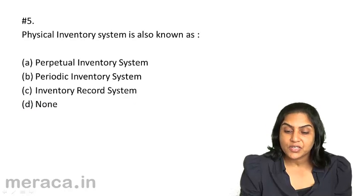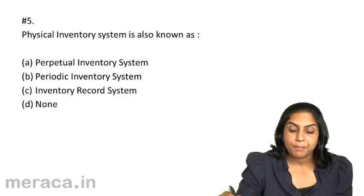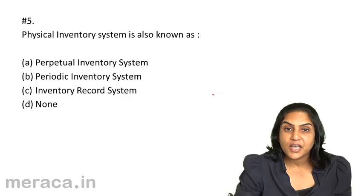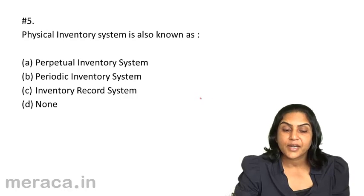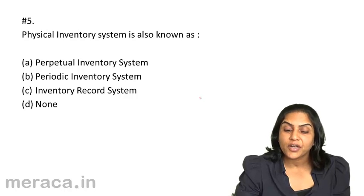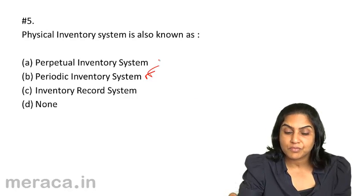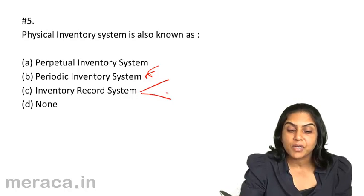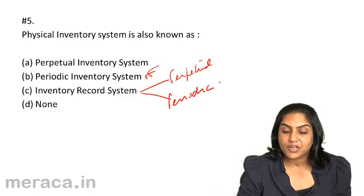Physical inventory system is also known as — A. Perpetual inventory system, B. Periodic inventory system, C. Inventory record system. The correct answer is B. Physical inventory system is also known as periodic inventory system. Perpetual inventory system is the opposite. We have two kinds of inventory record system: perpetual and periodic. The correct answer is B, periodic inventory system.